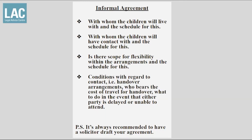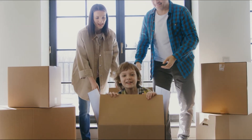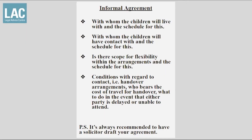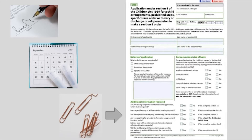To apply, you need to draft a written informal agreement which, as a minimum, covers the required areas. This agreement must serve the child's best interests — if not, the judge would likely reject or amend it. The agreement needs to be signed, dated, and attached to a C100 form found online. You would need to pay a £215 fee to submit these, either online or by post to your nearest family court.